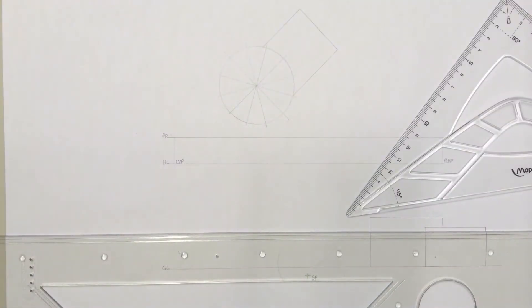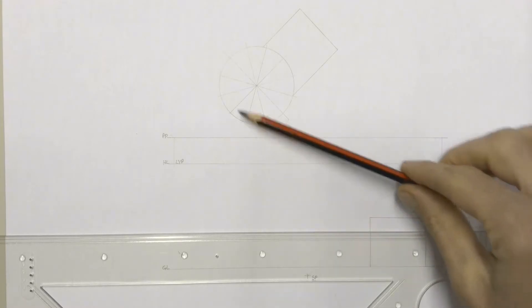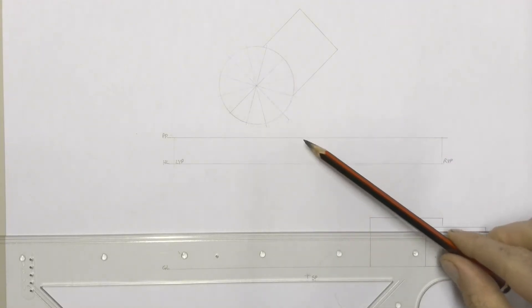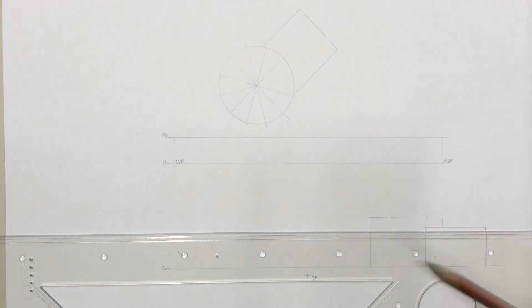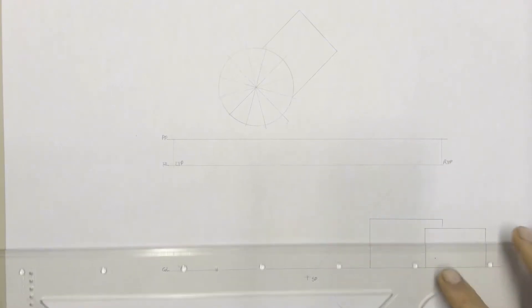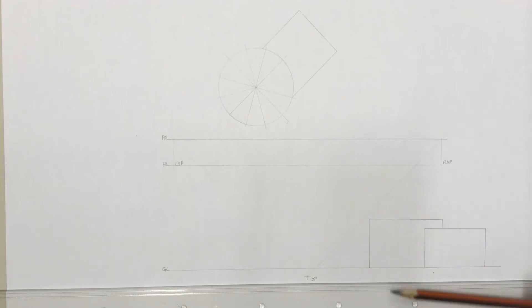That's your first step: break up your circle into 12 parts using your 30 and 60 degree set square. Then once you've done that, you're going to extend every single one of those points onto the picture plane to be able to find them in your two-point perspective.